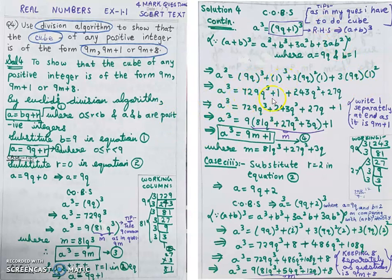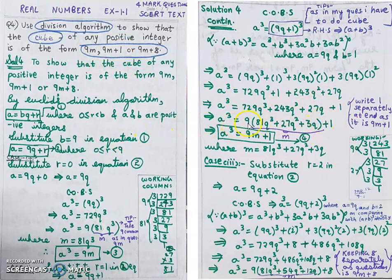Now, since my target form is 9m plus 1, I keep the +1 aside and group the remaining terms: 729q³ + 243q² + 27q. In all three of these terms, 9 is a common factor.